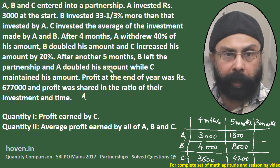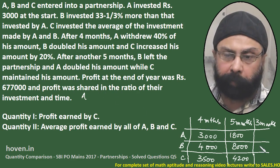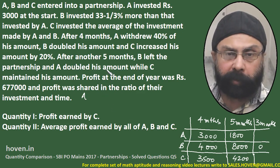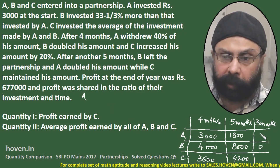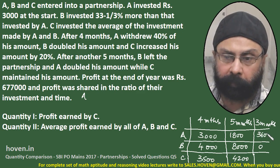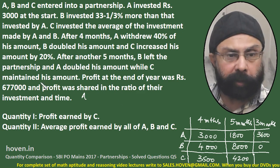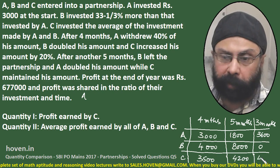And after 5 months, B left the partnership, so B becomes 0. A doubled his amount, so A becomes 3600. And C maintained his amount, so C stays at 4200.